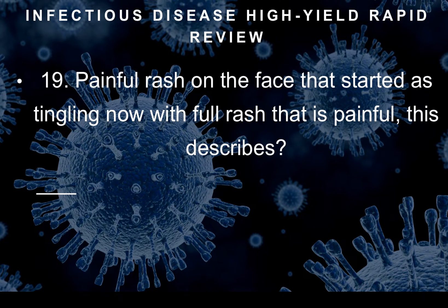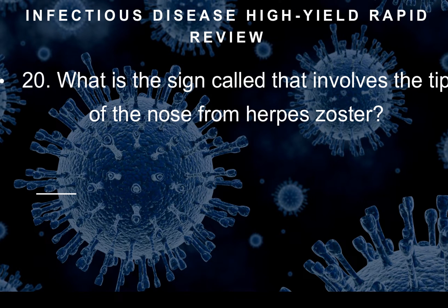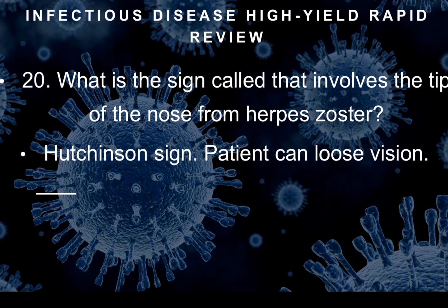Question nineteen: A painful rash on a face that starts as tingling but is now a full-on rash — this describes herpes zoster. It's the only rash that starts as tingling and develops into a painful full-blown rash. Question twenty: What is the sign called that involves the tip of the nose from herpes zoster? The Hutchinson sign is the correct answer. If the tip of the nose is involved, the patient is at risk for vision loss.